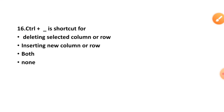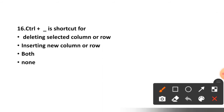Question number sixteen: Control plus minus is a shortcut key for what? Deleting selected column or row, inserting new column or row, both, or none? The correct option is option number one, deleting the selected column or row.